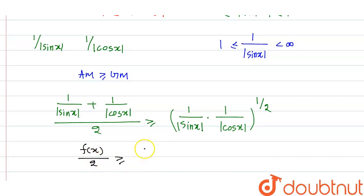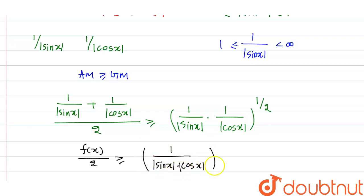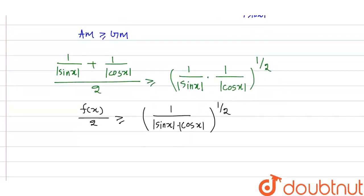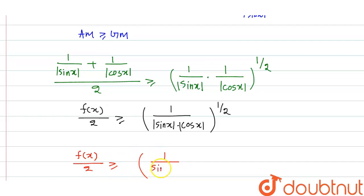Since |sinx| and |cosx| are already positive, there is no further need to apply modulus. So f(x)/2 ≥ (1/(sinx · cosx))^(1/2). Multiplying and dividing by 2, we can write 2·sinx·cosx = sin2x.